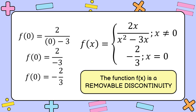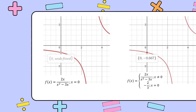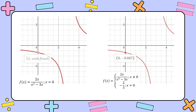Since we are able to remove the discontinuity and redefine the function, we conclude that this function is an example of a removable discontinuity. On the graph, f of x has an undefined value at x equal to 0; however, we are able to remove the discontinuity with our redefined function.